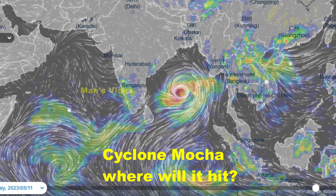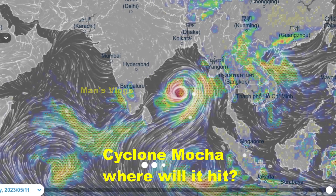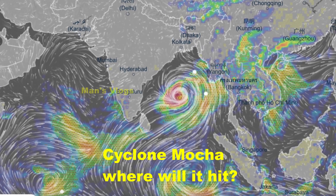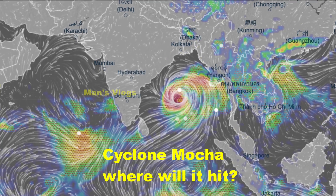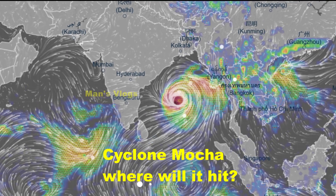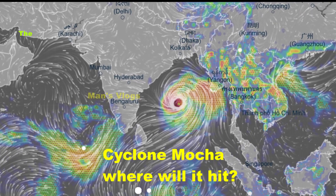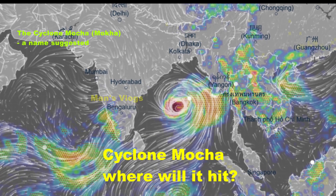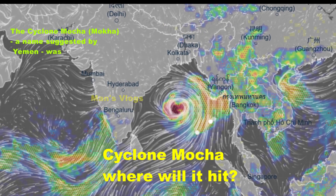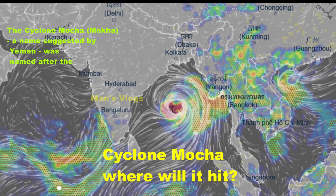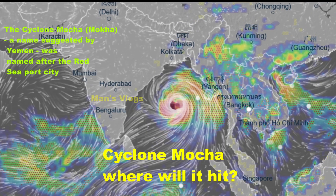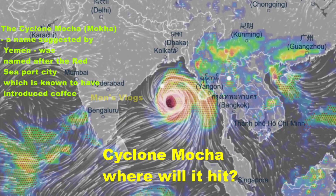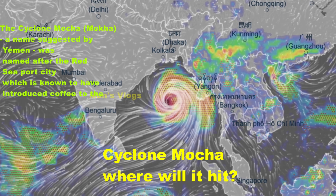But have you ever wondered how cyclones get their names? In general, tropical cyclones are named according to the rules at regional level. Cyclone Mokha, a name suggested by Yemen, was named after the Red Sea port city which is known to have introduced coffee to the world over 500 years ago.